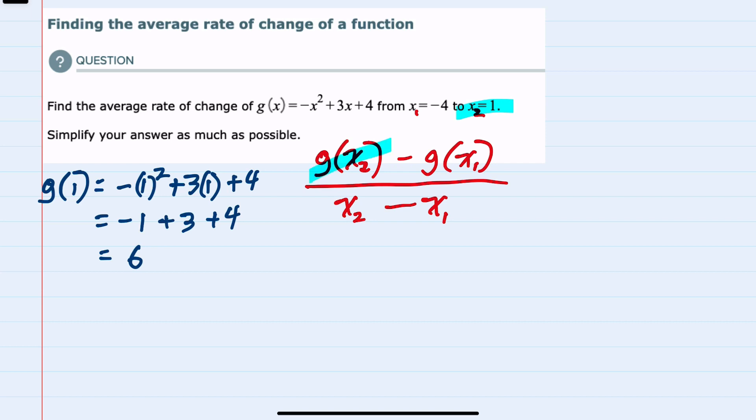So substituting in, this is 6 minus—now I have to find g(x₁), which is negative 4. So g(−4) is, again replacing x with negative 4, negative (−4)² plus 3 times (−4) plus 4.